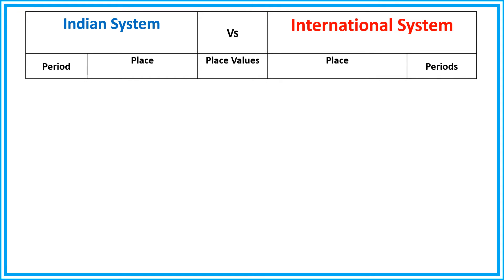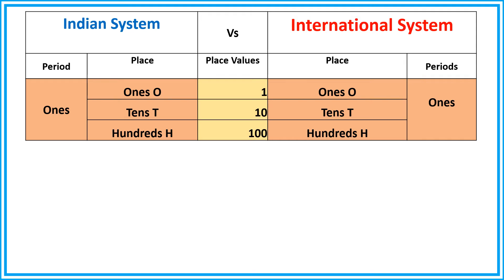Now we shall compare the Indian system versus the international system. In the Indian system, it starts with ones, tens, hundreds — and the international system also starts with ones, tens, and hundreds. Here we refer to this as the ones period. A period is when a number is written in standard form; each group of digits separated by a comma is called a period. So ones, tens, hundreds is known as the ones period in both the Indian and international systems.